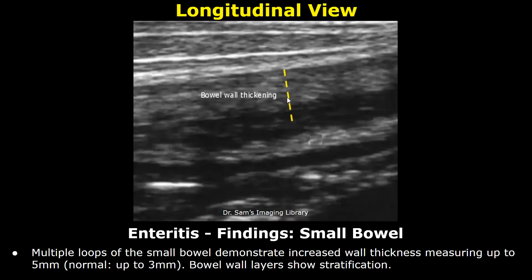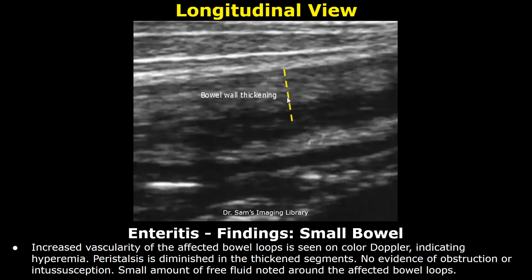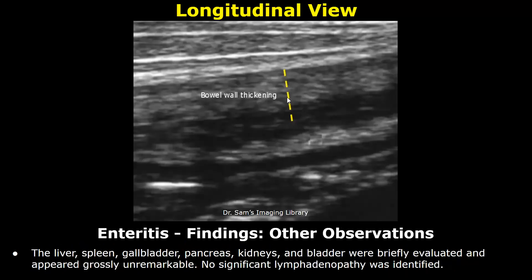Bowel wall layers show stratification. Increased vascularity of the affected bowel loops is seen on color Doppler, indicating hyperemia. Peristalsis is diminished in the thickened segments. No evidence of obstruction or intussusception. A small amount of free fluid is noted around the affected bowel loops. The rest of the scan was unremarkable.